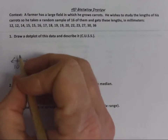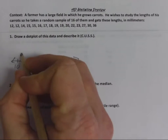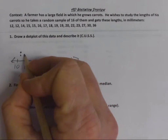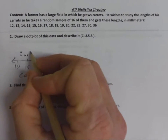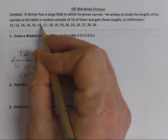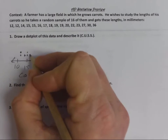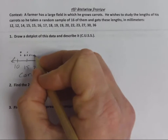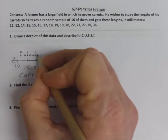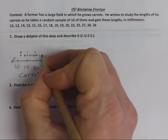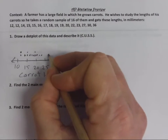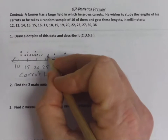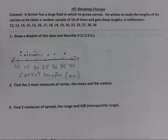We have 12 twice, so two dots at 12. This doesn't have to be a perfect graph — the whole purpose is to understand in general what's happening with the data. We have 15 and 15, then 16, 17, 18, two 19s, a 20 and a 22, a 23, a 27, a 30, and a 36. And so we have graphed the data.